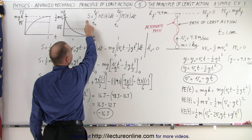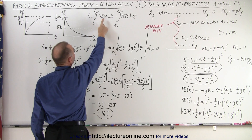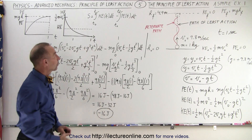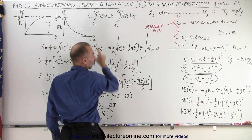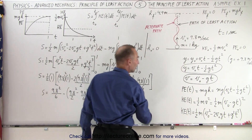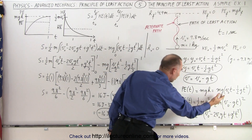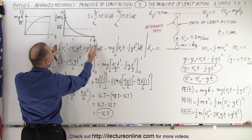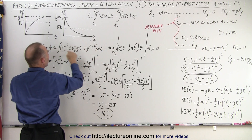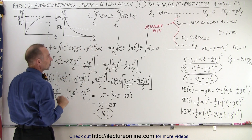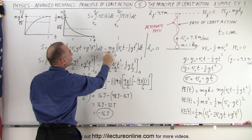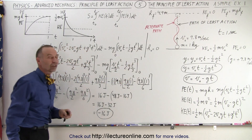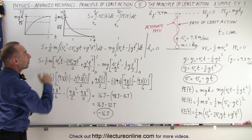The action can be calculated by the integral over time of the kinetic energy as a function of time minus the potential energy as a function of time. Since we have KE(t) and PE(t) defined, we can plug those equations in. The action is one-half mass times the integral of velocity squared, which is the kinetic energy portion, minus mg times the height as a function of time — integrating over velocity squared and height as functions of time.